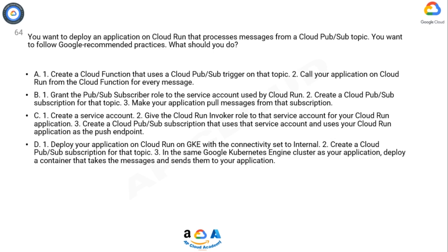Option D: 1) Deploy your application on Cloud Run on GKE with the connectivity set to internal. 2) Create a Cloud Pub/Sub subscription for that topic. 3) In the same Google Kubernetes Engine cluster as your application, deploy a container that takes the messages and sends them to your application. Now take 10 seconds to think about the answer.